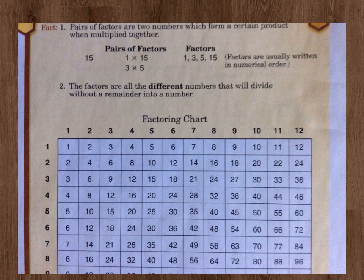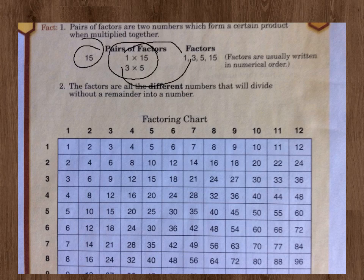So now you see it again with the number 15. The pairs of factors were 1 times 15, 3 times 5. And then the factors were 1, 3, 5, and then 15.